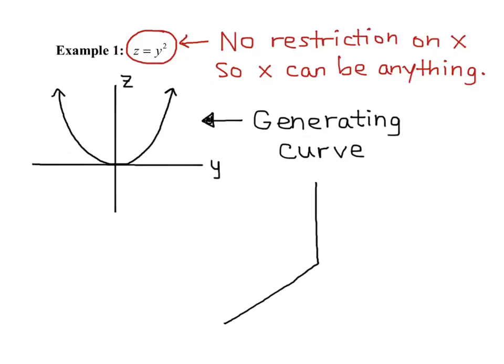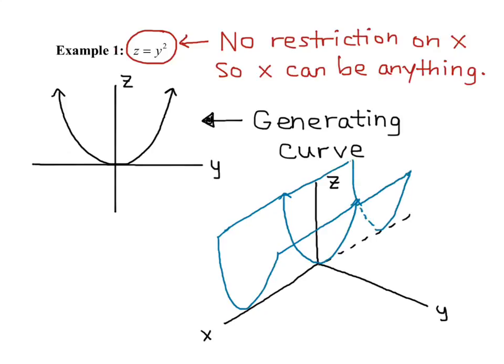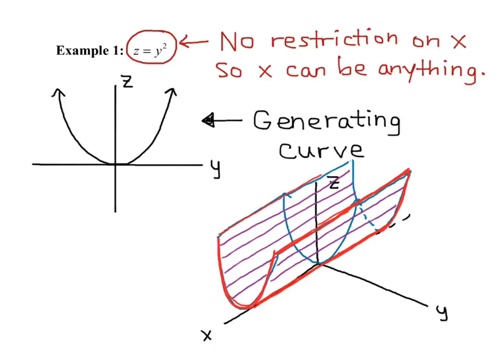So let's go ahead and graph this in three dimensions. We have our x, y, and z axes, and then we have the negative x-axis as well. If we look at our generating curve, the parabola, we have it on the y-z plane. And what we want to do is put that parabola anywhere on the x-axis. And so what happens is I get this parabolic cylinder expanding along, and I end up with this nice graph. And it expands both directions along the x-axis.